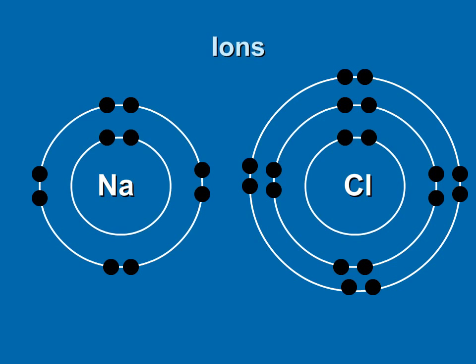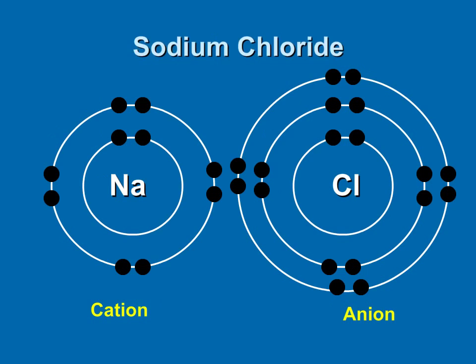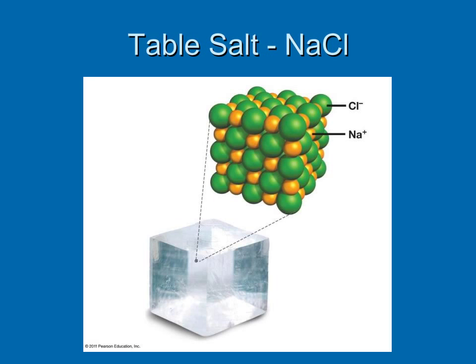Charged atoms are called ions, and we can give them specific names depending on what kind of charge they have. Positive ions are called cations, and negative ions are called anions. The oppositely charged ions are attracted to each other, and this forms the ionic bond. When this occurs between sodium and chlorine, we get sodium chloride. When lots of chlorine and sodium atoms get together, crystals are formed. The salt you put on your food is a mass of sodium and chlorine atoms ionically bonded to one another, forming a structure called a crystal lattice.